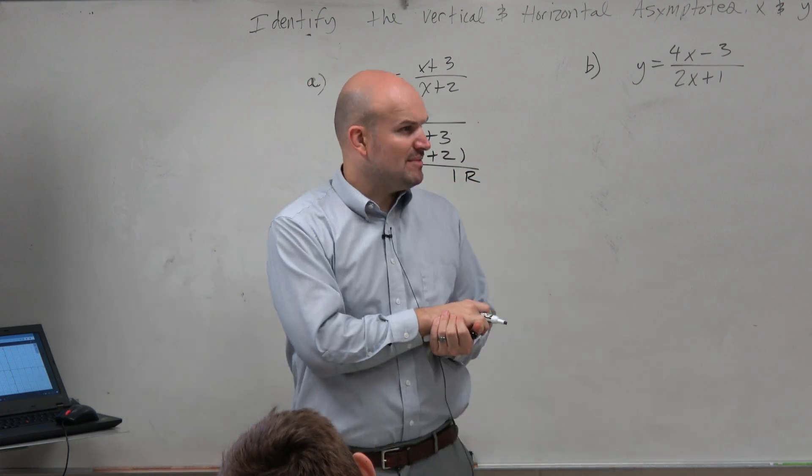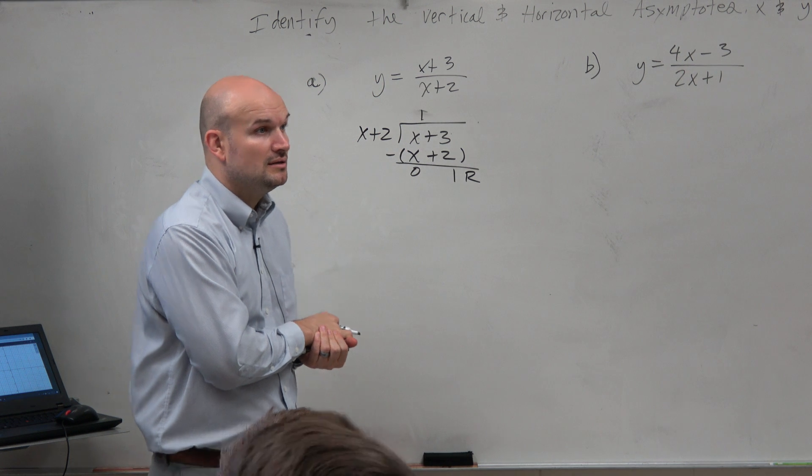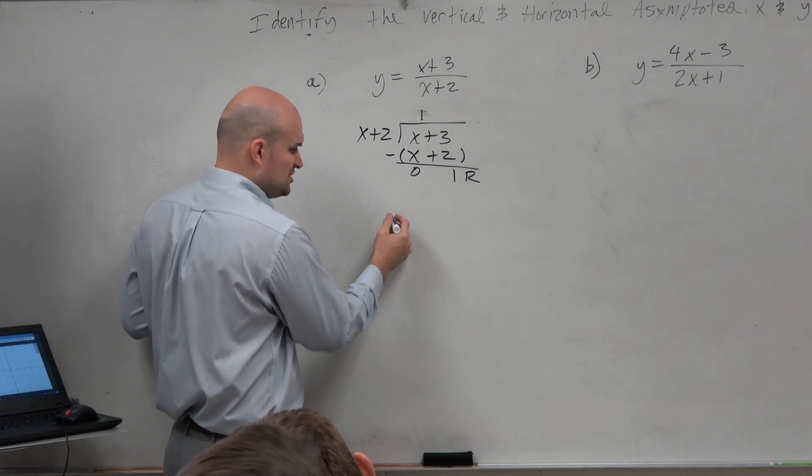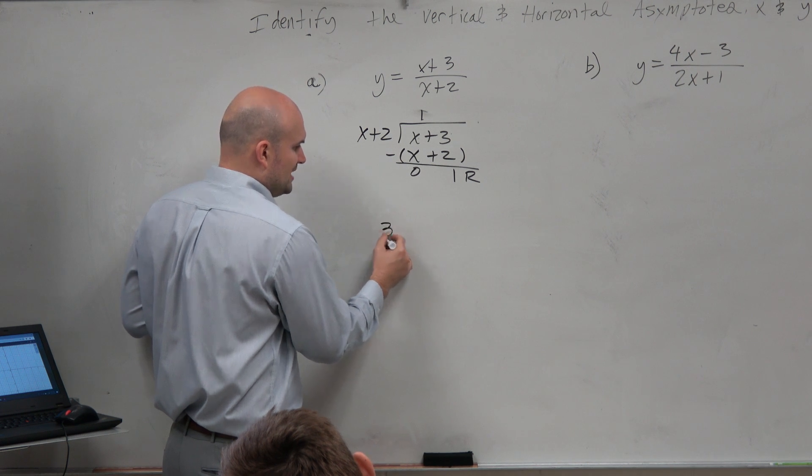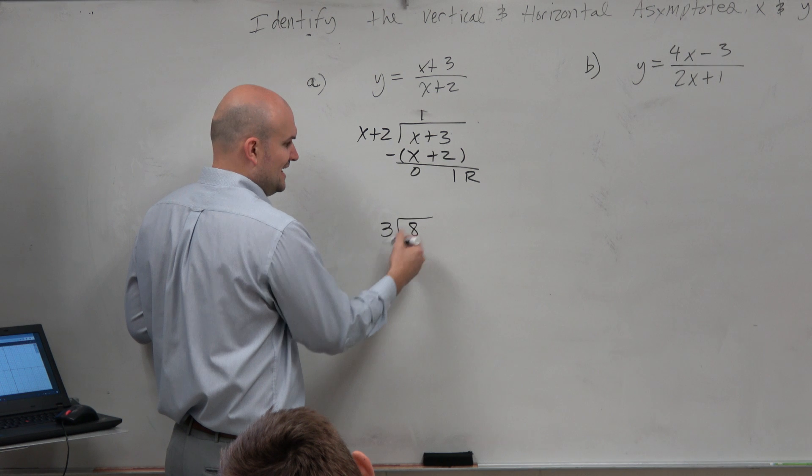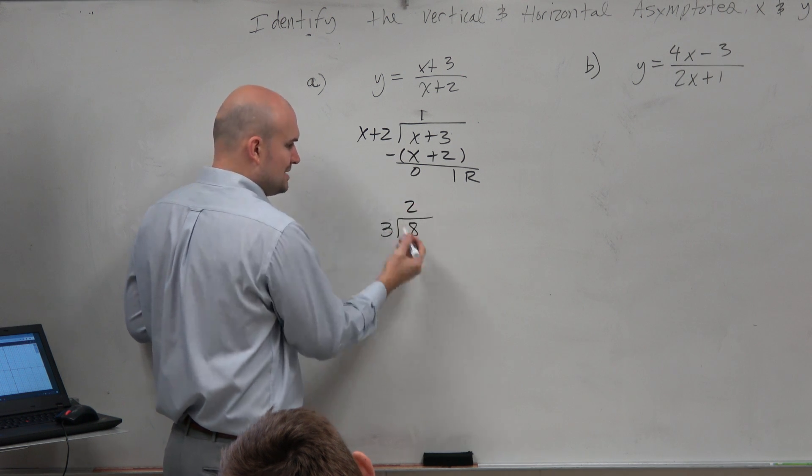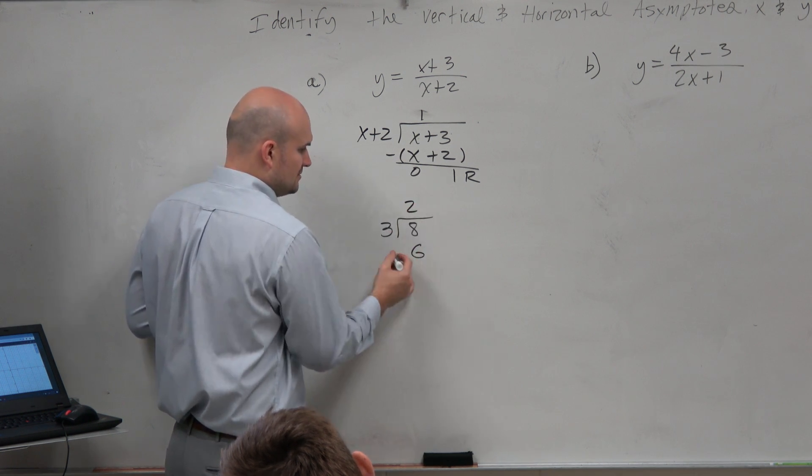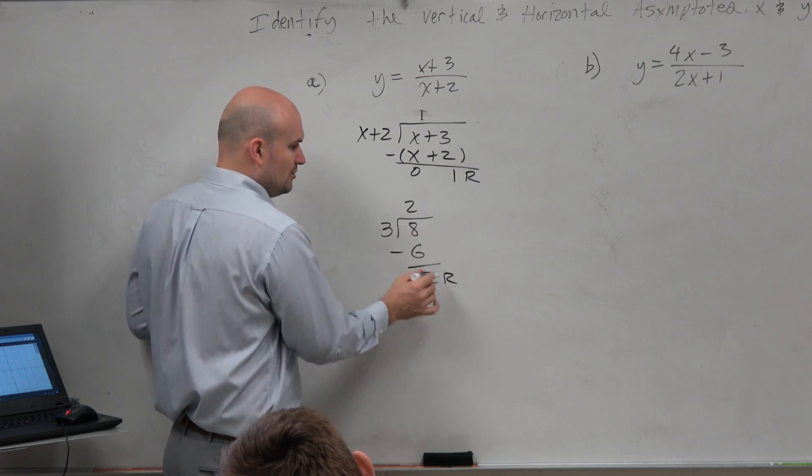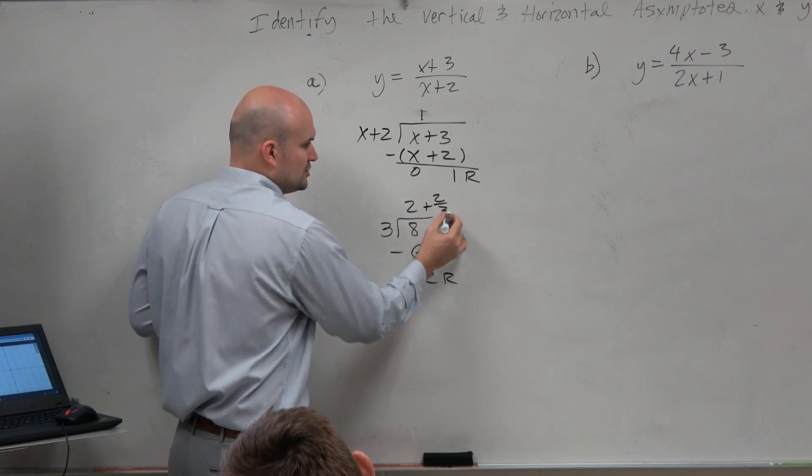Now, does anybody remember how we write our remainders? Yeah? 1 over the, or whatever your remainder is over the divisor. Right. You write it over your divisor. And let's just make sense of that again. 3 divides into 8, 2 times. 2 times 3 is 6. That gives you 2. That is your remainder, right? So it's 2 plus 2 thirds.